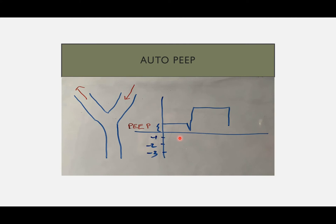What happens if there is auto-PEEP developing — for example, if there is water inside the ventilator circuit? The waveform will not touch at the baseline; it will start from an elevated level. If about 5 centimeters of PEEP has developed in the circuit, the waveform baseline is shifted up by 5 centimeters.